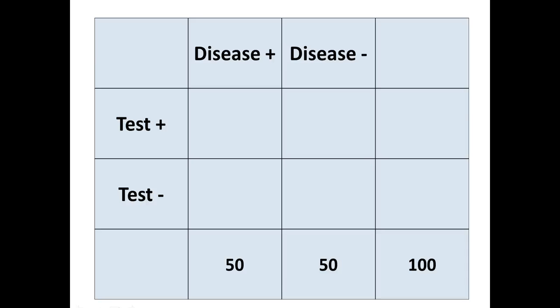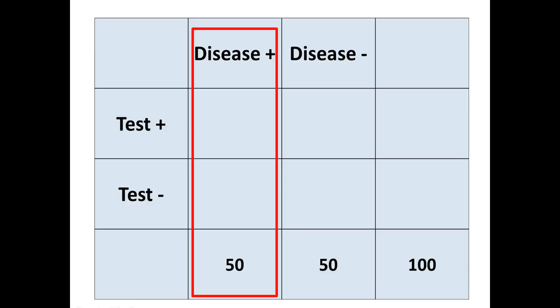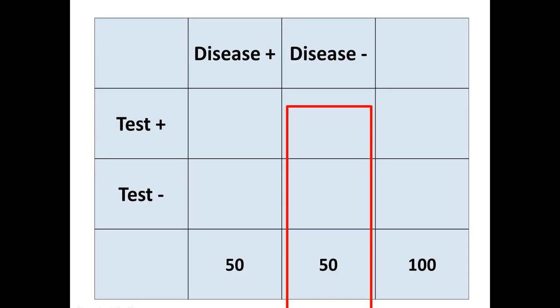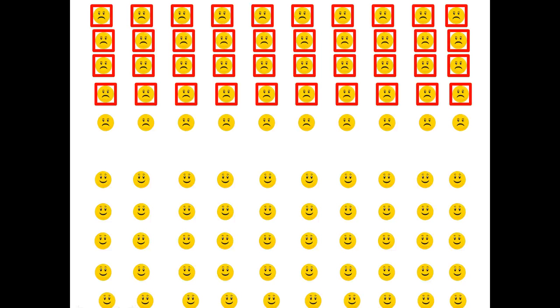In this case, we said we had 50 people with the disease and 50 people without the disease. Looking at the people on top — 50 people with the disease — let's say when we applied our diagnostic test, 40 of them tested positive, outlined in red. So 40 out of 50 people with the disease tested positive. That's our estimate of sensitivity. That's all sensitivity is.